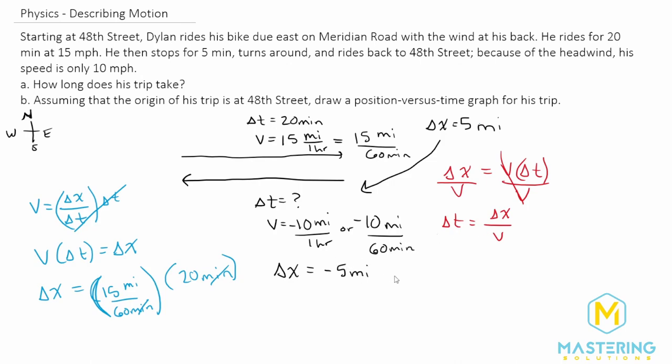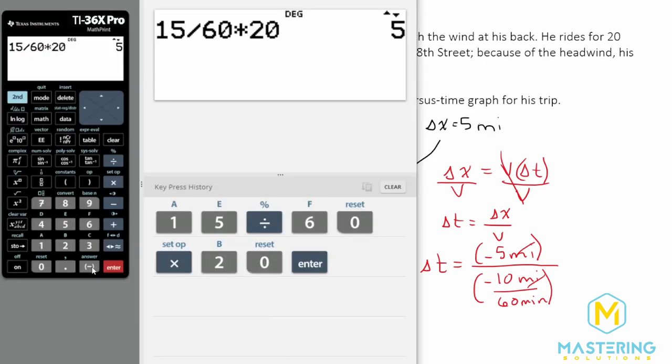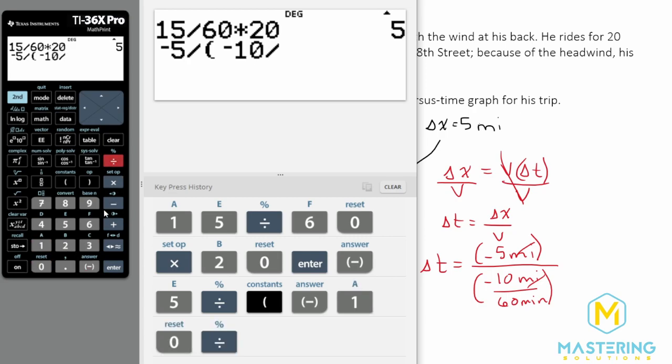So now we can plug everything in. So we know that he went a negative five miles. And then he went a negative 10 miles per 60 minutes. And so now when we divide by a fraction, we are multiplying by the reciprocal, the miles will cancel, and we'll be left with just minutes. So we have negative five divided by negative 10 divided by 60.